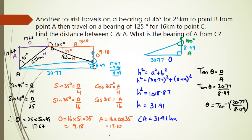30.77 divided by 8.49 gives me an angle of 74.57 degrees. But remember, to get a bearing, I need to add 180. So in this case, bearing is 74.57 plus 180, and that's going to give me 254.57 degrees.